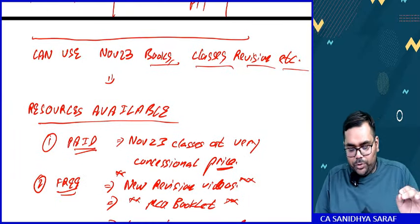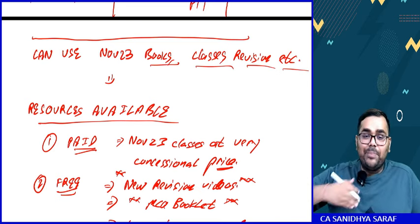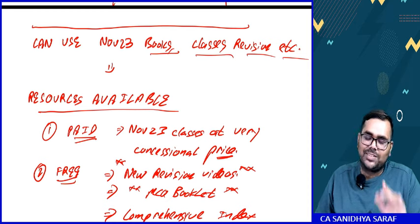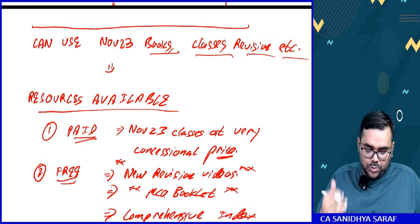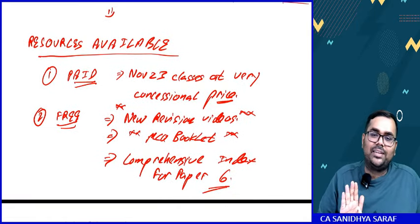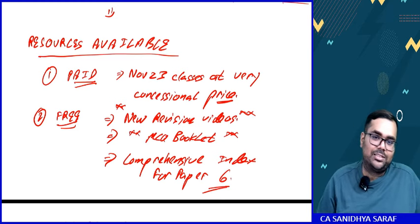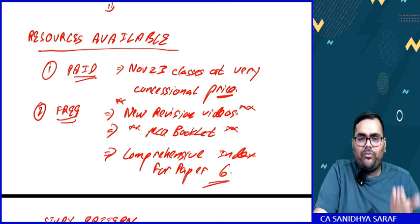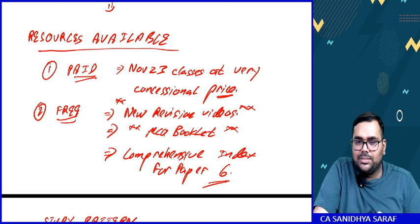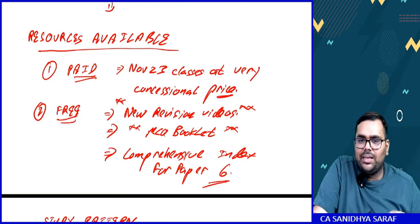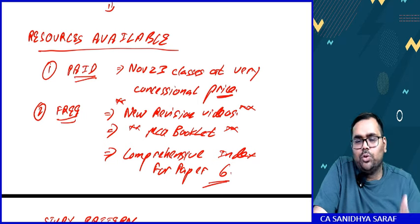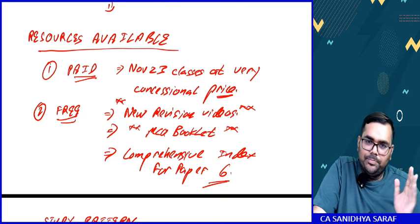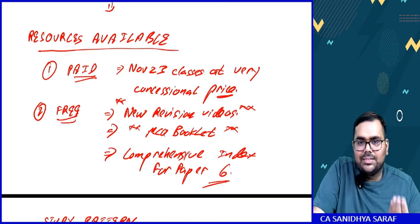So you can use November 23 books, classes, and revision videos. Regarding paid resources — my full November 23 classes are available at a very concessional price. The complete 100-hour regular lecture is available at ₹2000, and the 60-hour fast track course is available at ₹1200 with e-books. So November 23 classes are available at very concessional prices.